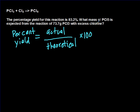So they say here, what mass of PCl5, based on this reaction here, is expected from the reaction of 73.7 grams of PCl3 with excess chlorine?